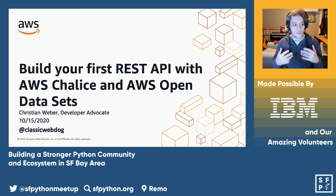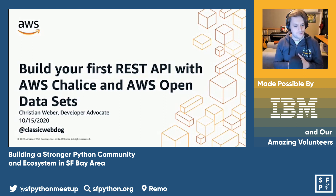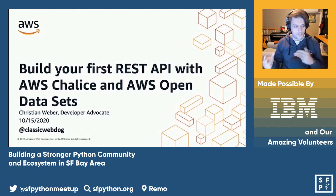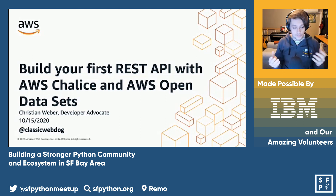My name is Chris. I am a developer advocate at Amazon Web Services — a perpetual beginner to just about everything I do. I'm always trying to learn and really excited to talk about what we're going to be talking about today, which is building a REST API with AWS Chalice using AWS open data sets.